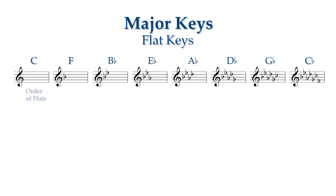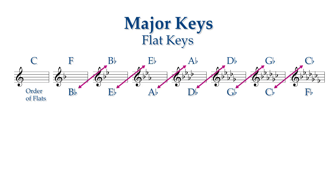The flats added in order starting with B are B, E, A, D, G, C, F. Once again the order of the tonics and the order of the flats are the same but shifted one place in the opposite direction compared to the sharps.